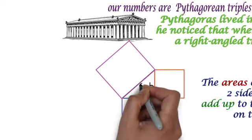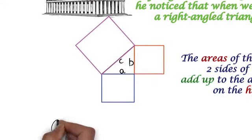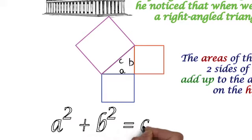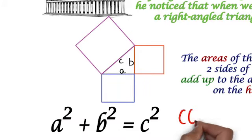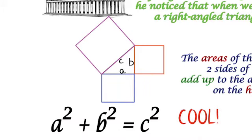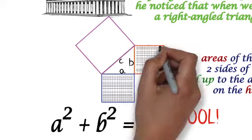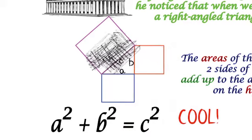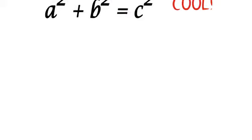Pythagoras' theorem is often expressed as a squared plus b squared equals c squared. And here you can see how that works. The squares on the two sides of the triangle make the same area as the squares on the hypotenuse.